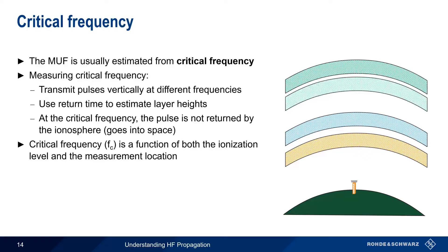Critical frequency is a function of both the current ionization level as well as the measurement location. It's measured regularly at hundreds of locations around the world. Mathematically speaking, the maximum usable frequency is the critical frequency divided by the cosine of the angle of incidence. If we send a signal straight up at 90 degrees, MUF and critical frequency are the same. But as a practical matter, the maximum usable frequency is usually estimated at 3 to 5 times the critical frequency.